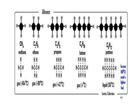Starting from methane and inserting a CH₂ gives ethane; inserting another CH₂ gives propane; another gives butane; another gives pentane and so forth — each successive member of the alkane series is simply the previous one with a CH₂ group added.